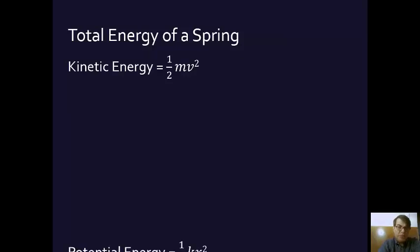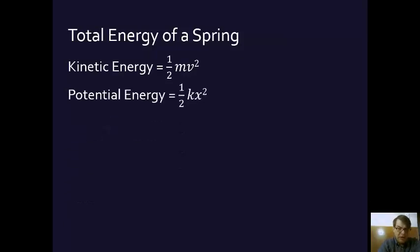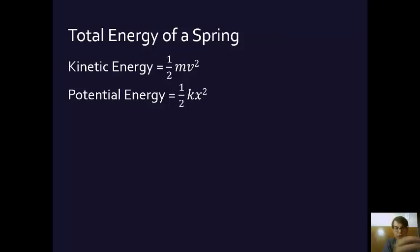We know from Chapter 7 in Young and Friedman that the potential energy of a spring is ½k times the displacement squared. Whatever potential energy a spring has at a particular point depends on how far it is from its resting point squared, times the spring constant, divided by 2.